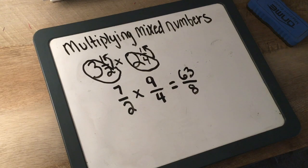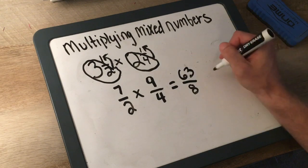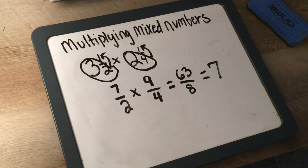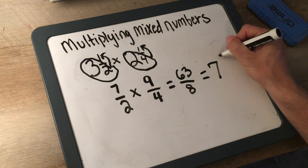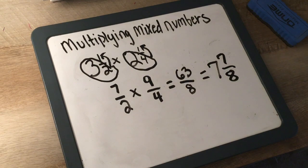We have an improper fraction. We have to change that to a mixed number. How many times does 8 go into 63? I know 8 can go into 64 eight times, so I know it's going to be 1 less. 8 times 7 would be 56, so we know it can go 7 times. We just have to figure out what's left over. 63 minus 56 equals 7. And we keep the denominator. So our answer is 7 and 7/8.